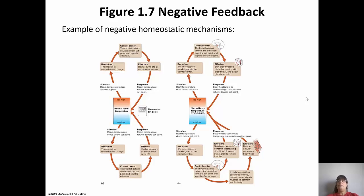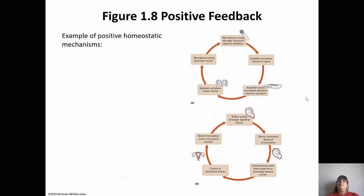You can compare negative feedback to a thermostat in your house. You set it to a desired point: if it gets too hot, the air kicks on; if it gets too cold, the heat kicks on. The positive homeostatic mechanism is kind of the opposite - it amplifies the response. Two examples we always use are blood clotting and childbirth. With blood clotting, if you cut a blood vessel, platelets come to the area and send out chemicals to get more platelets there, and more and more platelets keep coming until the cut is sealed.